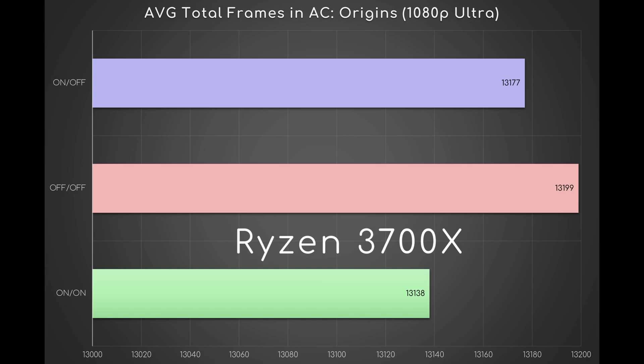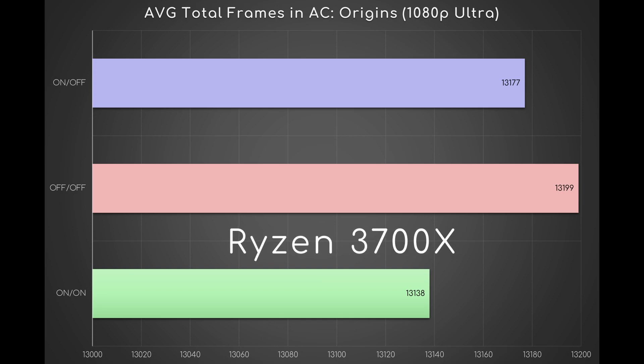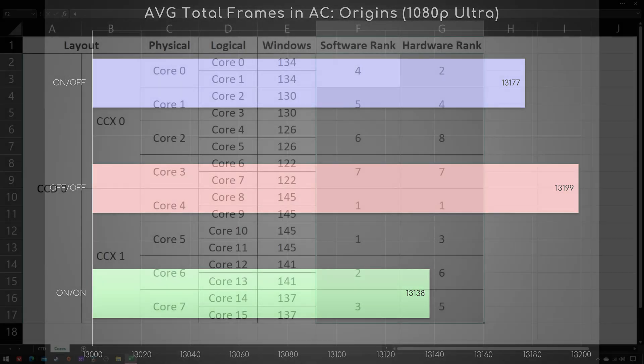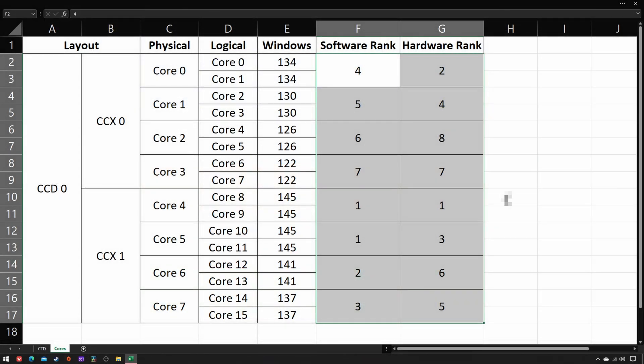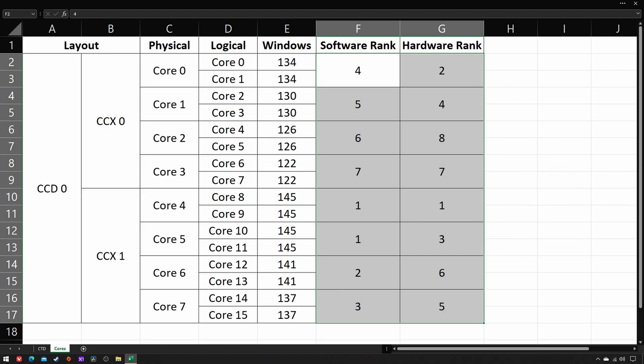On my Ryzen 3700X at least — and that is indeed the catch. The benchmark results may be heavily influenced by a CPU model, or perhaps even its specific sample. In fact, the order of the best scores varies from one to another. Unfortunately I cannot verify such a theory as I only own this processor. Thanks for watching and farewell for now.